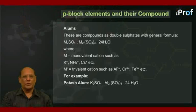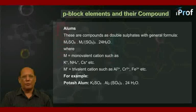potash alum, which is commonly known as alum, has the formula K2SO4·Al2(SO4)3·24H2O.